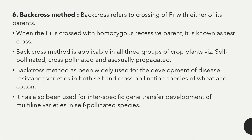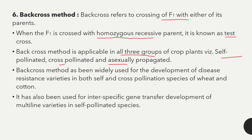The backcross method refers to the crossing of F1 with either of its parents. When the F1 is crossed with homozygous recessive parent, it is known as a test cross. The backcross method is applicable to all three groups of plants — self-pollinated, cross-pollinated, and asexually propagated. It has been widely used for the development of disease-resistant varieties in wheat and cotton.